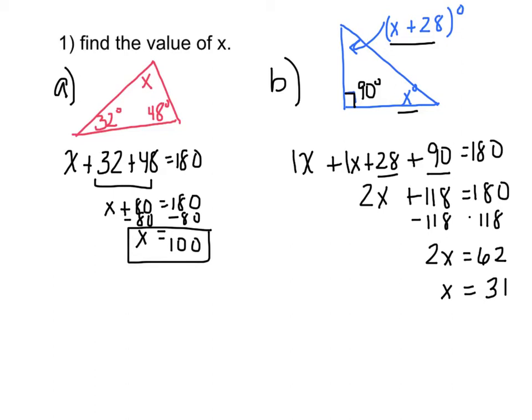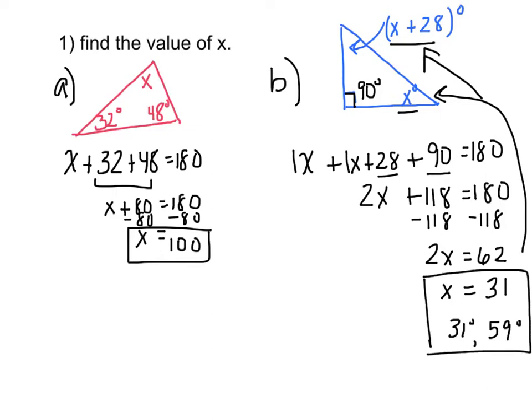Now, if I asked you what the missing angle measures are, you would take the 31 and plug it in for both expressions. The missing angle measures are 31 degrees, and then 31 plus 28, which is 59 degrees. So please make sure you answer the question. If the question asks for the value of x, all you need to write is x equals 100 or x equals 31. But if it asks for the missing angle measures, you have to take that value and plug it in.